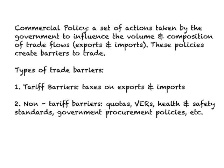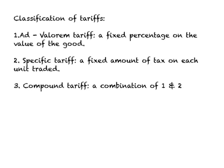There are two types of barriers: tariff and non-tariff. As far as tariffs go, we can classify them into three types. One is called ad valorem tariff, which is a fixed percentage on the value of the good — for example, a 5% duty on a $100 pair of shoes means you pay $5. A specific tariff is a fixed amount of tax on each unit traded, regardless of value — for example, $5 per pair of shoes imported. A compound tariff is a combination of ad valorem and specific tariffs.